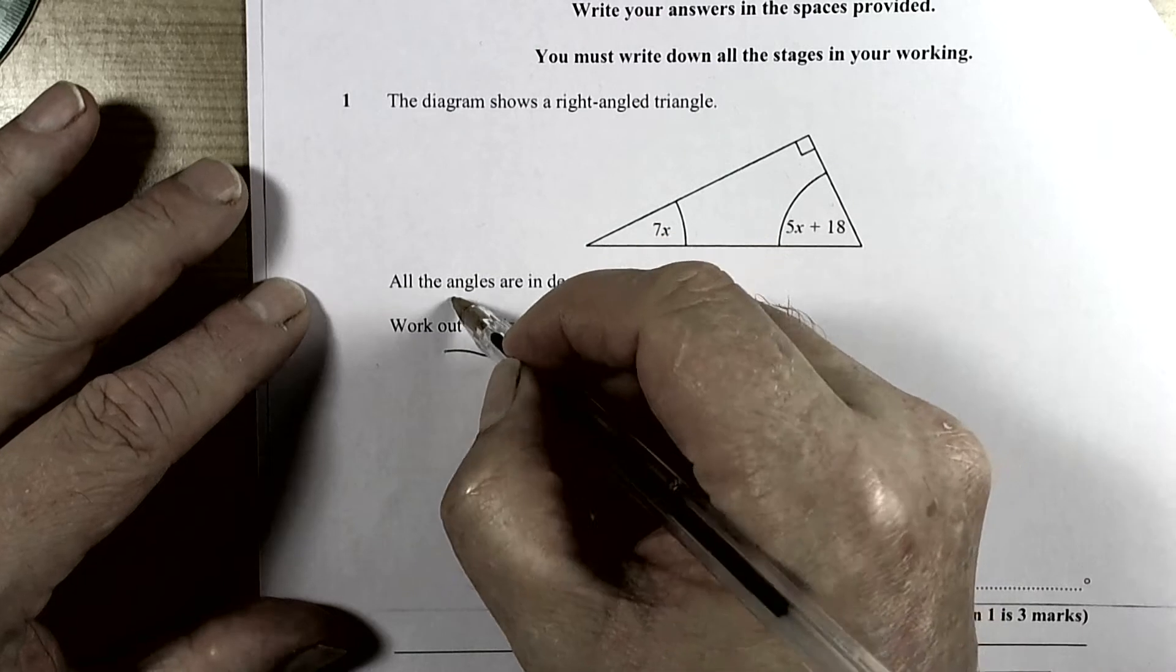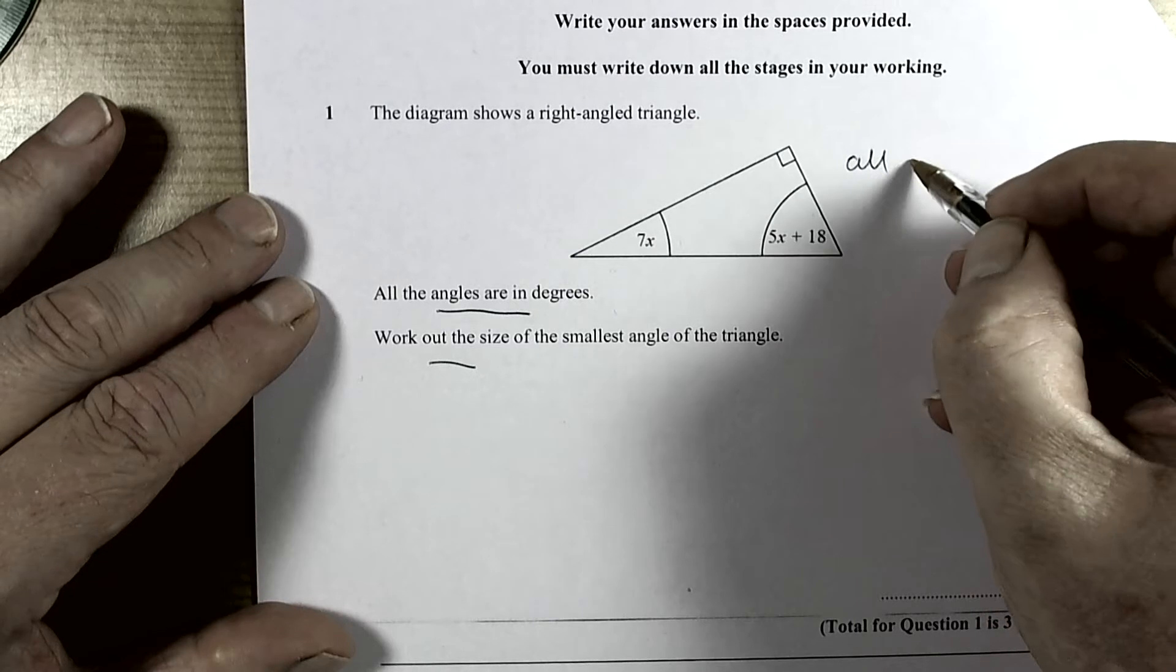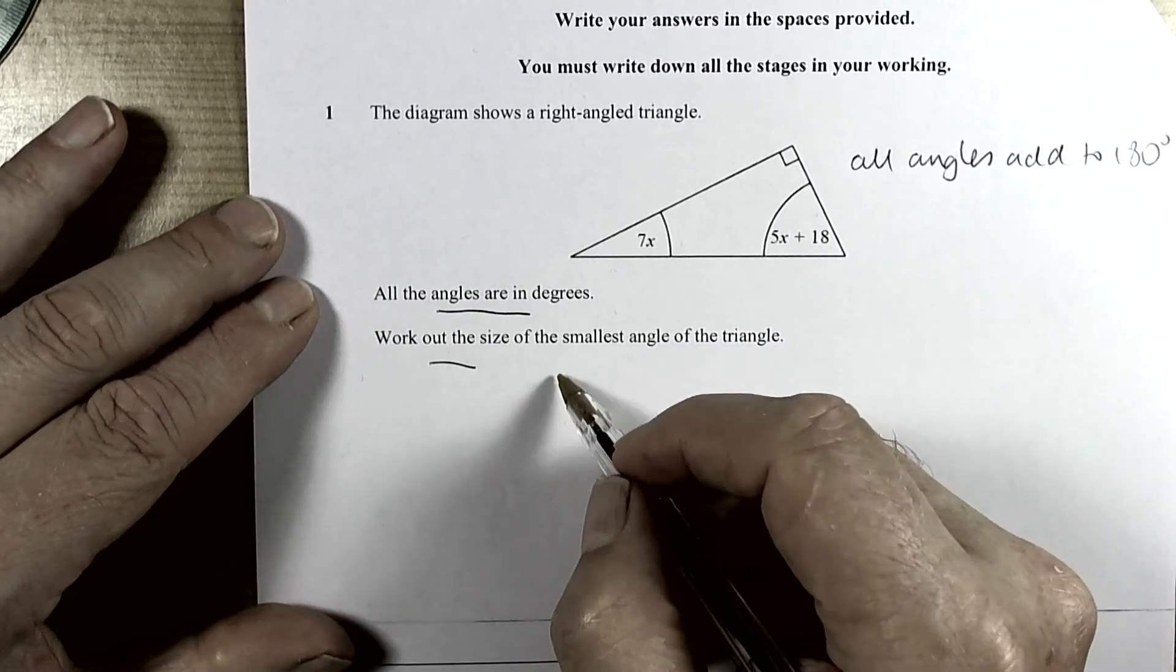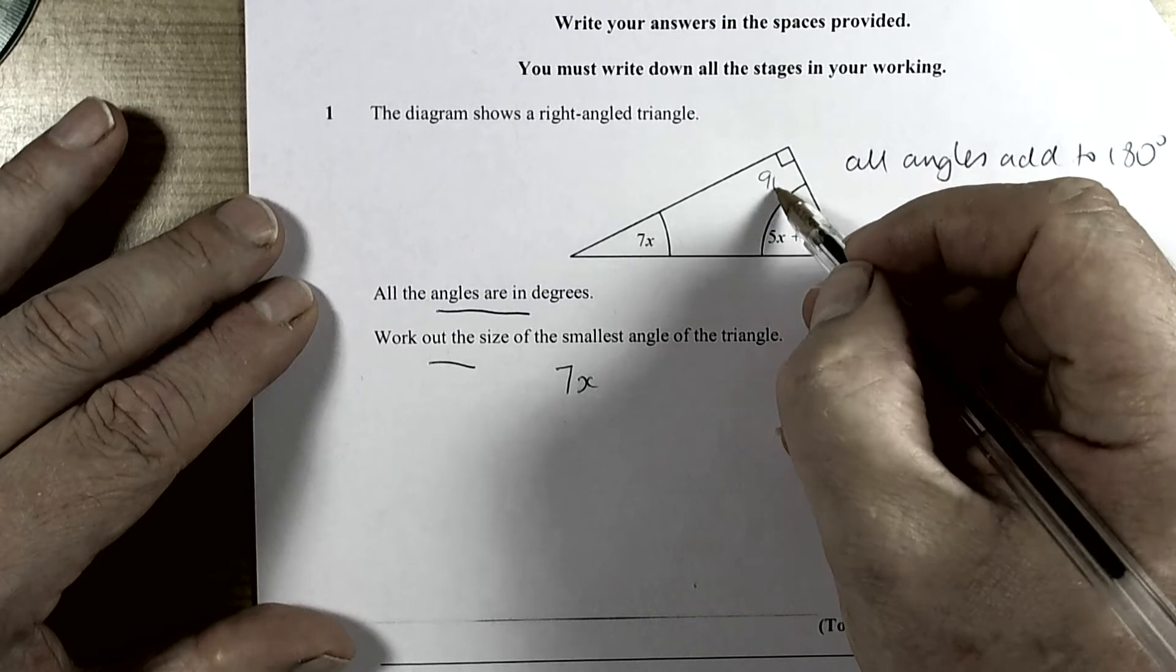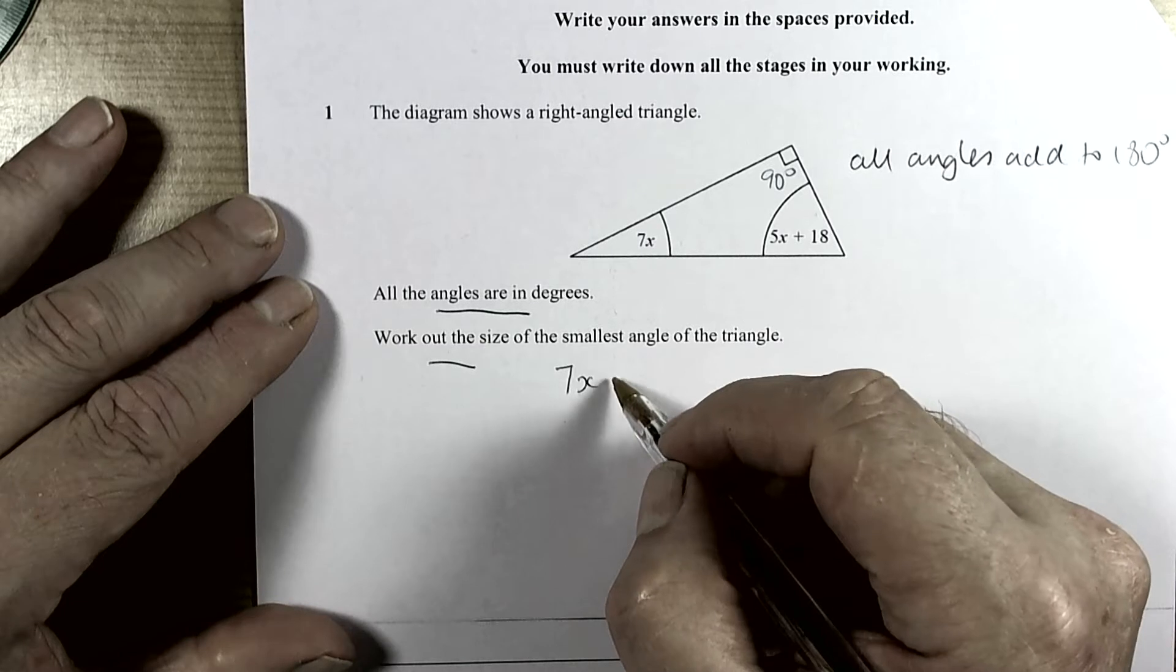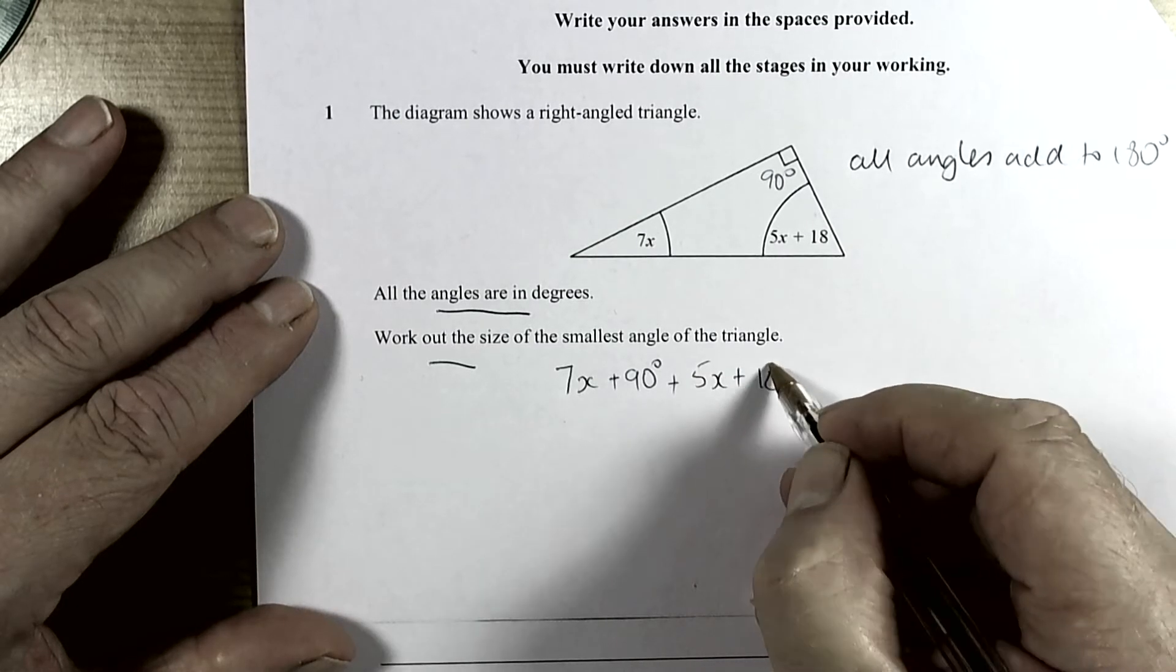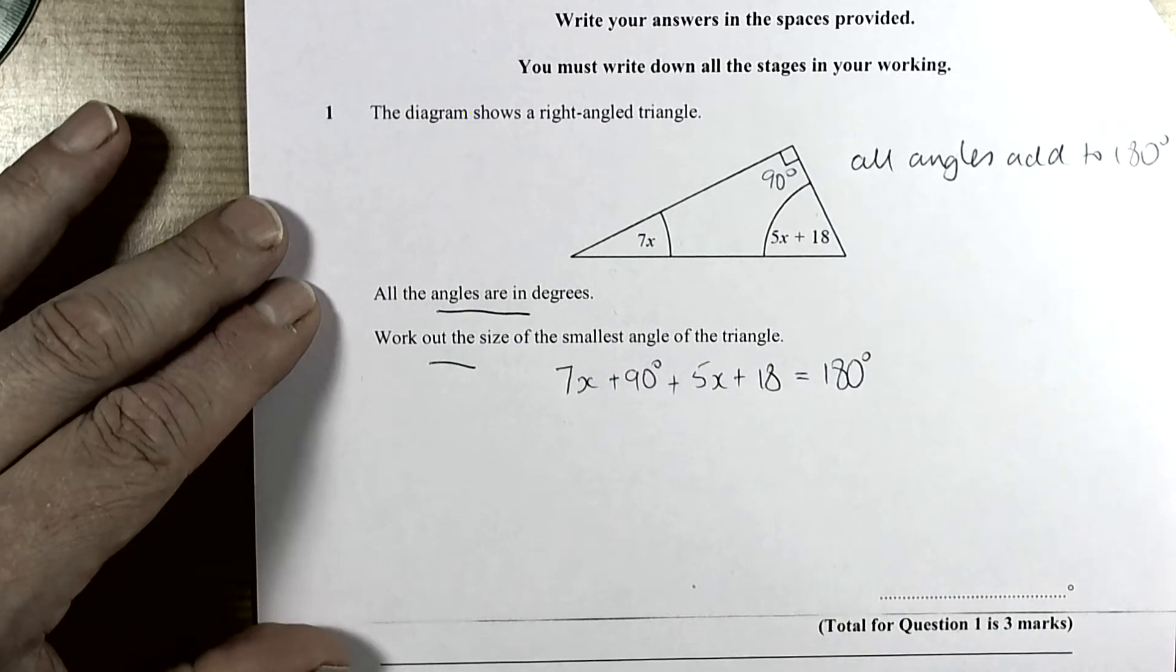We look at the important information: angles are in degrees, it's a triangle, and we know in a triangle all angles add to 180 degrees. So we take all the angles we know - that's 7x, this is 90 degrees because of the square at the vertex point telling us it's a right angle, and then we're adding the 5x plus the 18. An equation has an equals and it equals a fact, and the fact is 180 degrees.